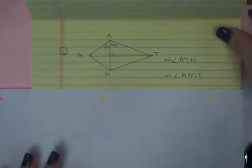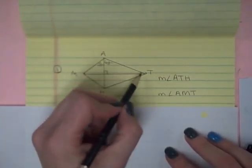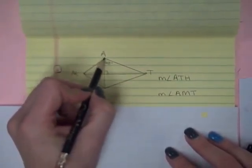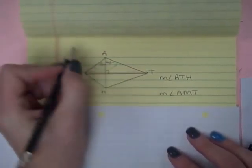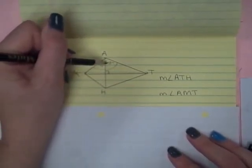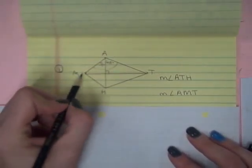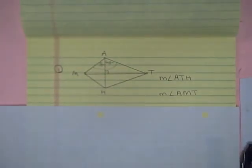The first one, let me look up here, we are looking for angle ATH and the measure of angle AMT. Right here we know that the measure of angle MAT is 55 degrees plus 68 degrees, and that the measure of angle MHT is also going to be the same based on the theorem we just did.